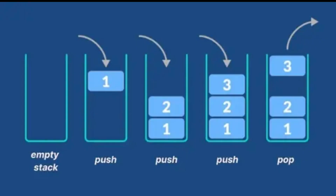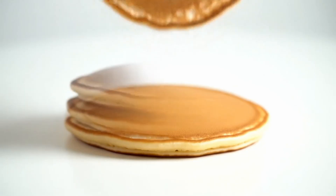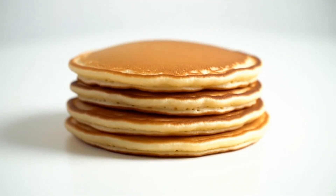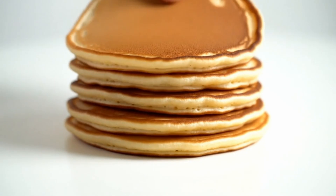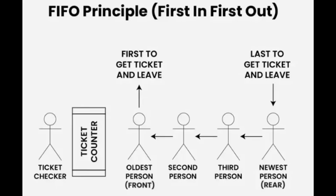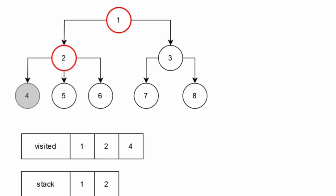Next, we have stacks. A stack is a list where the last thing you put in is the first thing you take out — you only add to the top and take from the top. Think of a stack of pancakes: the last pancake you put on is the first one you eat. Adding or taking from the top is fast: O(1). But looking for something in the middle of the stack is slow: O(N). Stacks are used a lot in a search method called depth-first search.